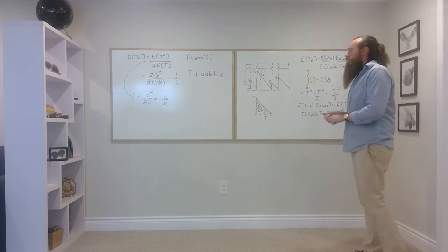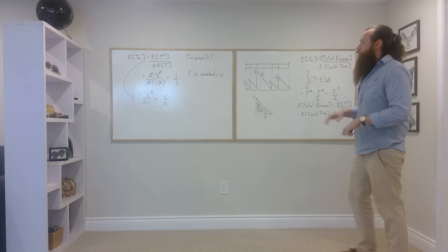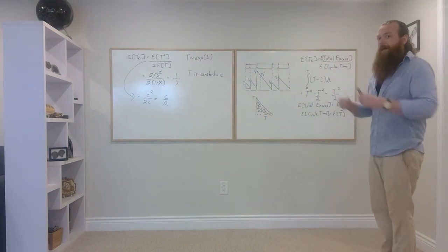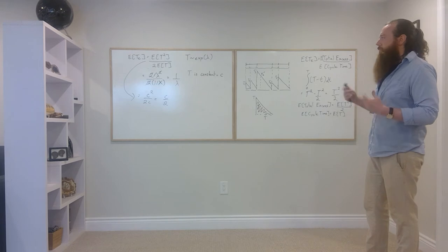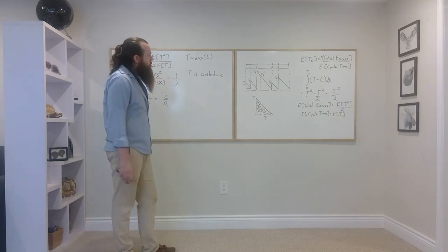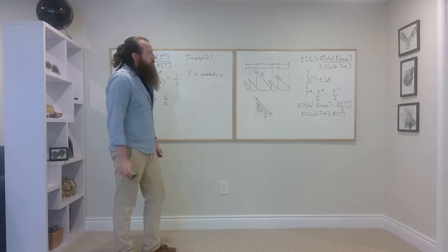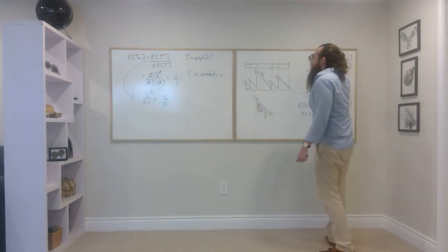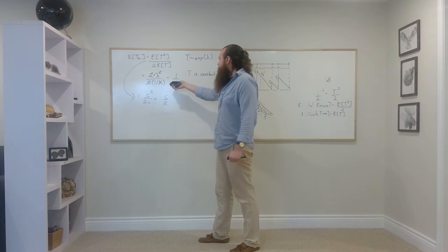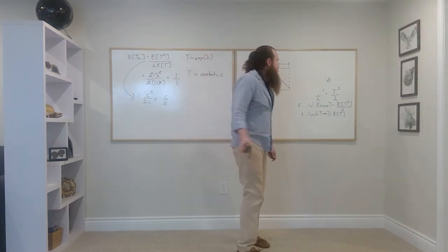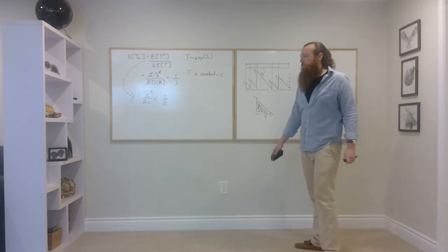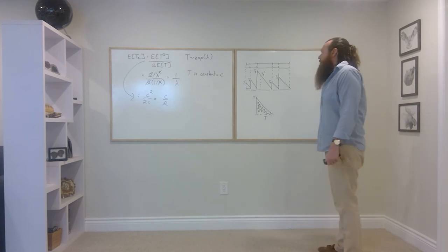This formula lets us arrive at the expected remaining processing time of jobs, or the expected excess time for a random variable given we arrive at a specific instance in time. Notice: if it's constant, we wait half the expectation; if it's exponential, we wait the full expectation. Now, what happens as the variance of the underlying distribution gets larger and larger?